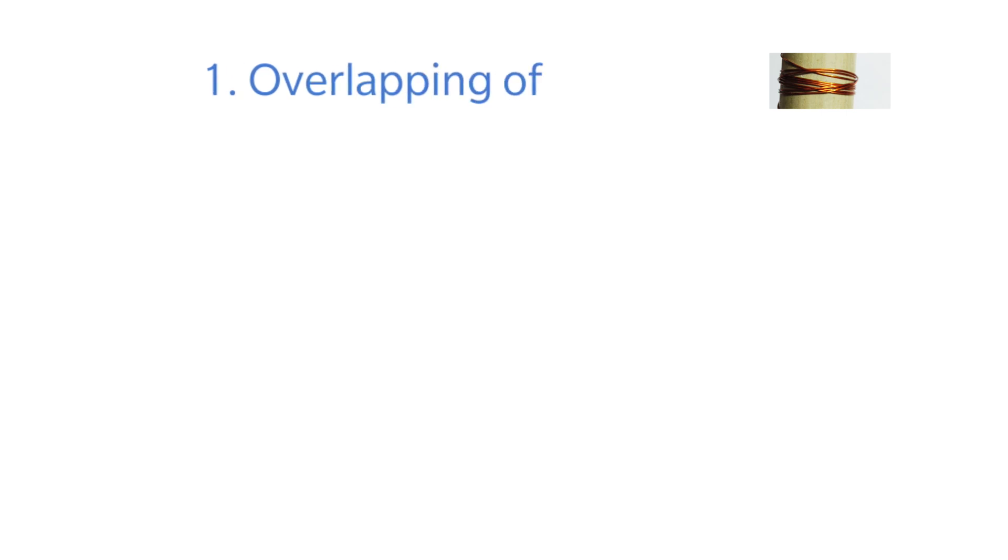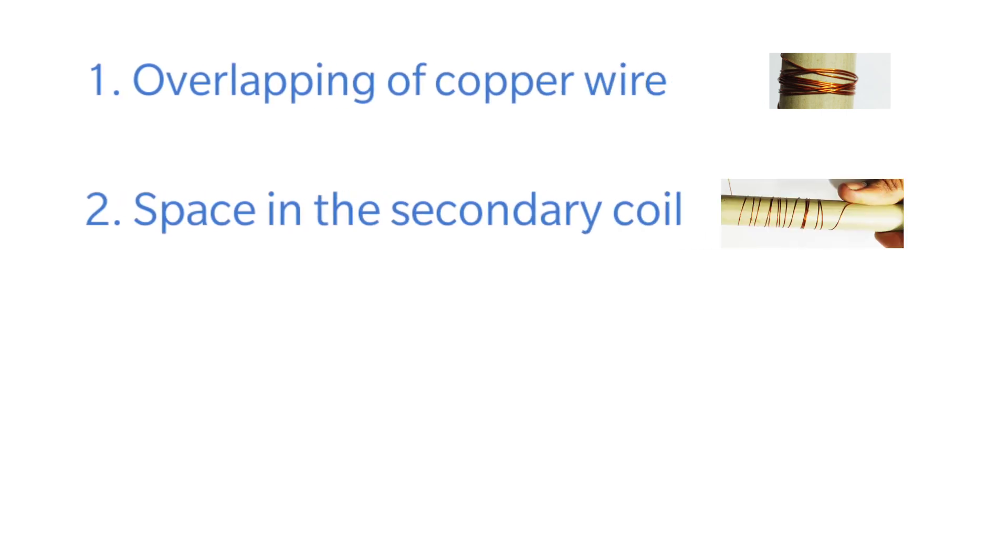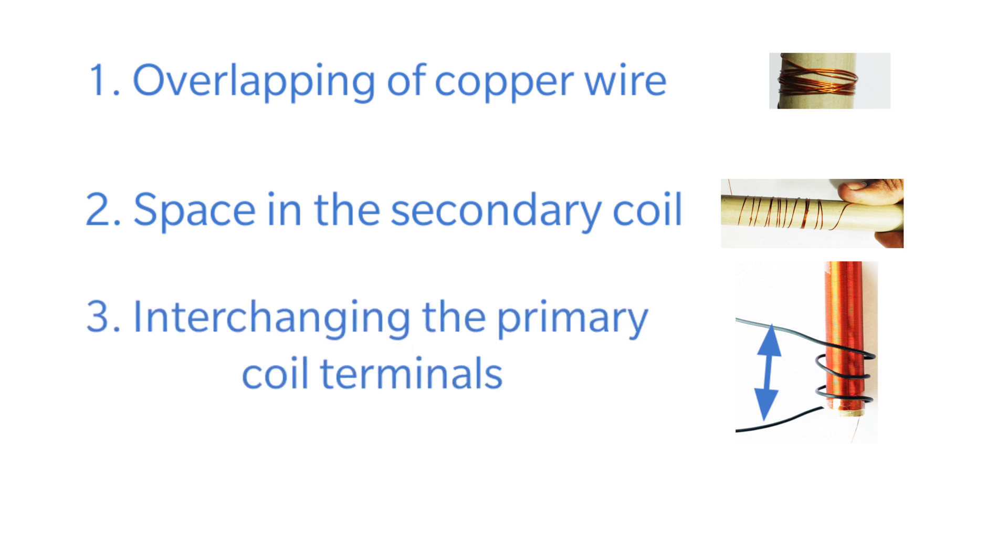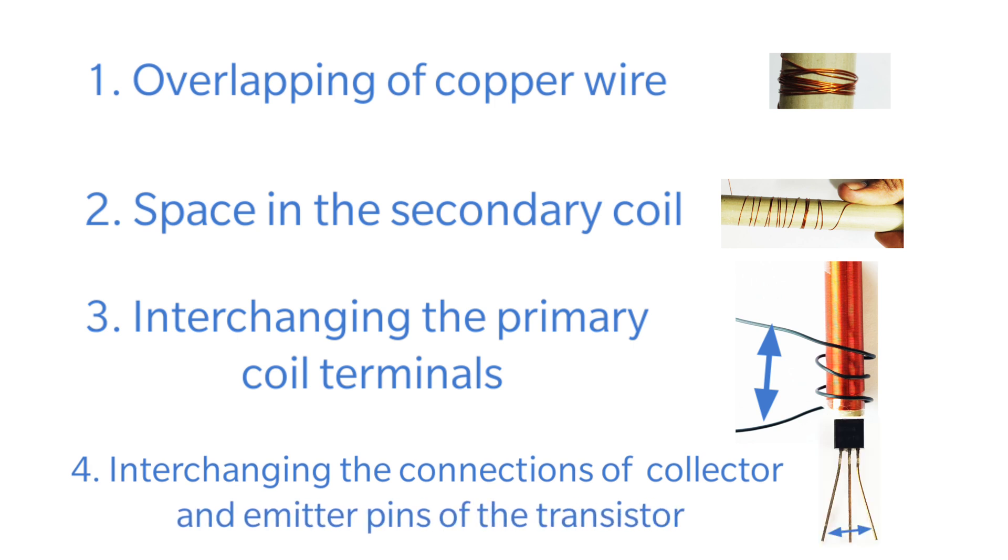Common mistakes to avoid: Overlapping of copper wire, space in between the rounds of secondary coil, interchanging of primary coil terminals, interconnection of emitter and collector pins of the transistor.